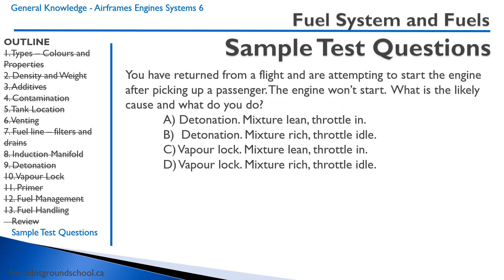You have returned from a flight and are attempting to start the engine after picking up a passenger. The engine won't start. What is the likely cause and what do you do? This is most likely vapor lock — vapor in the fuel system preventing liquid fuel from reaching the engine. Follow the hot start procedure in the pilot operating handbook: lean the mixture and have the throttle in. The correct answer is C.